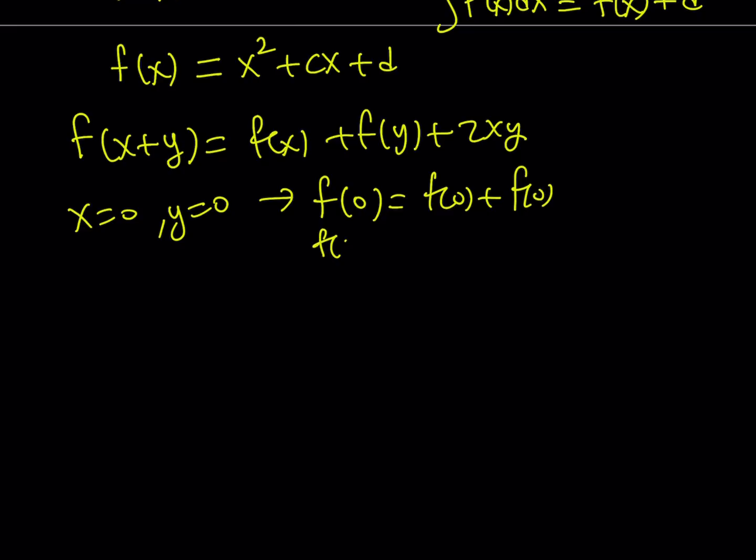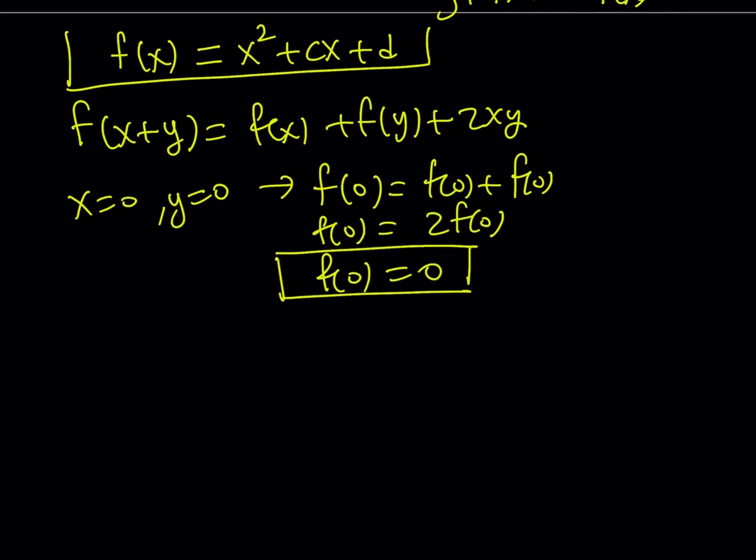This means f(0) is equal to 2 times f(0), and that basically means that 1 equals 2 if you cancel out the f(0), but don't do it, because this means f(0) is equal to 0. But what is f(0)? We do know f(x). So f(0) is actually d. So d is 0.